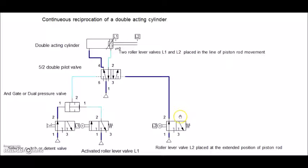As it is pressed, the signal comes out as a thick blue line and reaches the 5x2 double pilot valve. This would change the position of the double pilot valve and the cylinder will get air through this passage.